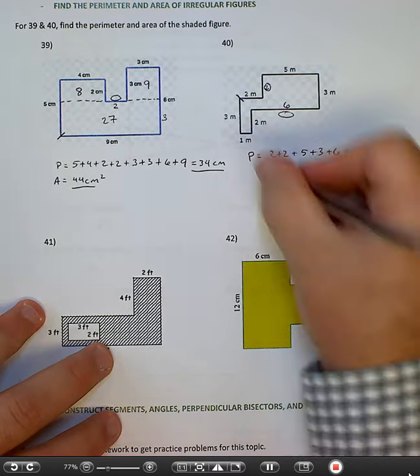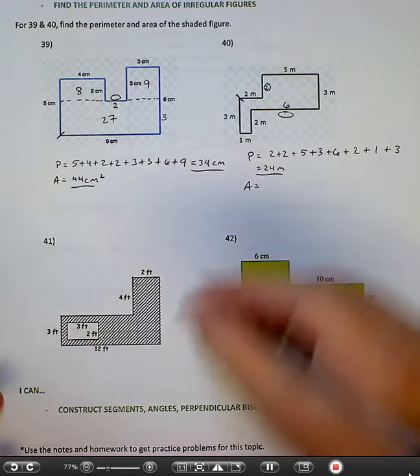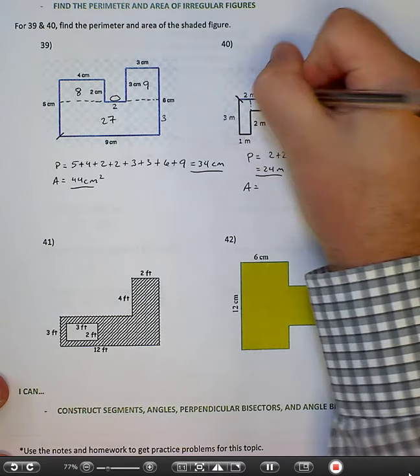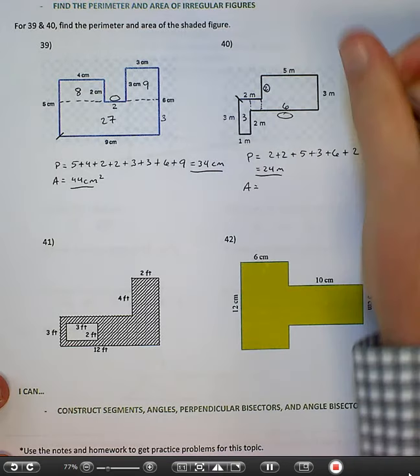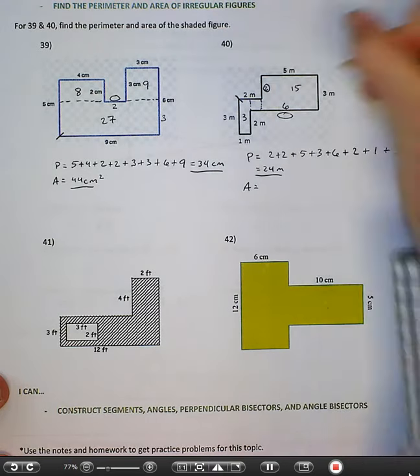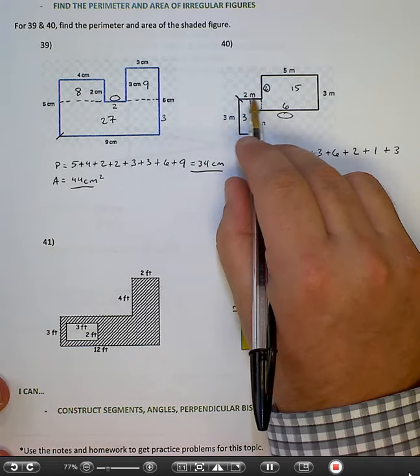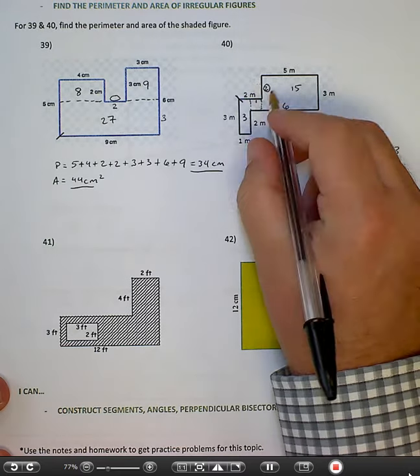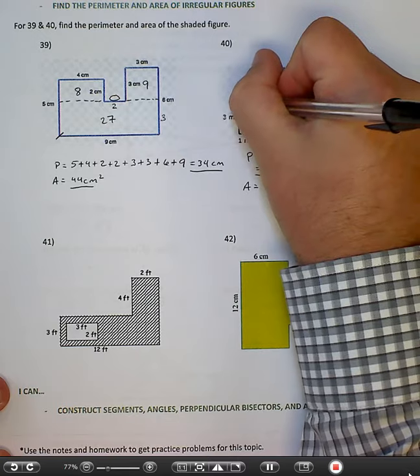The area, again, kind of tricky. I'm going to break it right here and right here. So this is a 3 by 1 box. That's 3. This is a 5 by 3 box. This is 15. Those two are pretty easy. This box right here, well, if this is 2 and this is 1, this has to be 1. And if this is 3 and this is 2, then that has to be 1. So that's a 1 by 1 box. The area is 1.